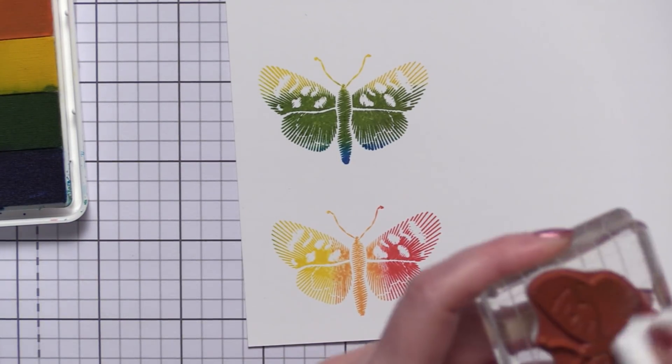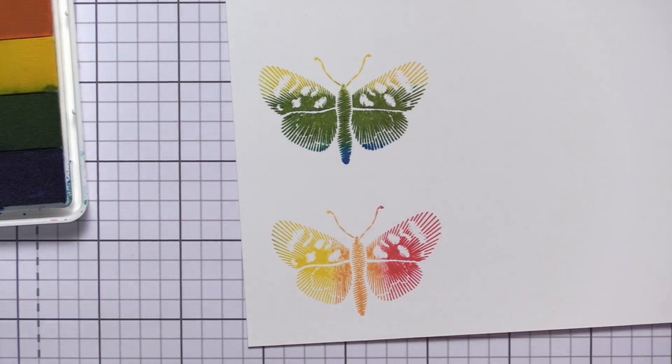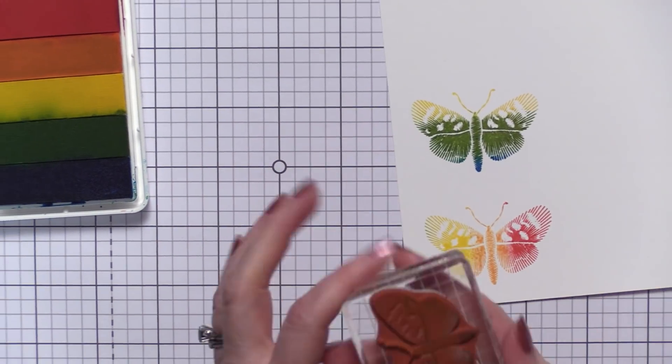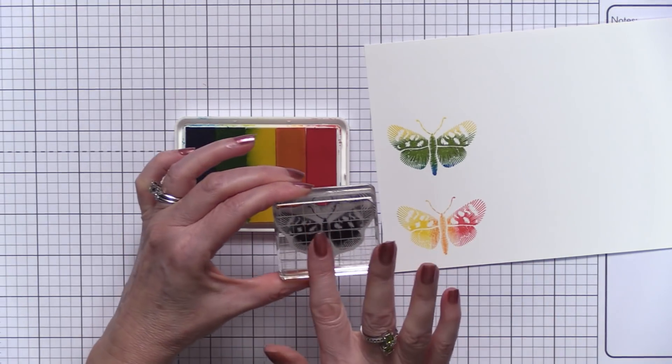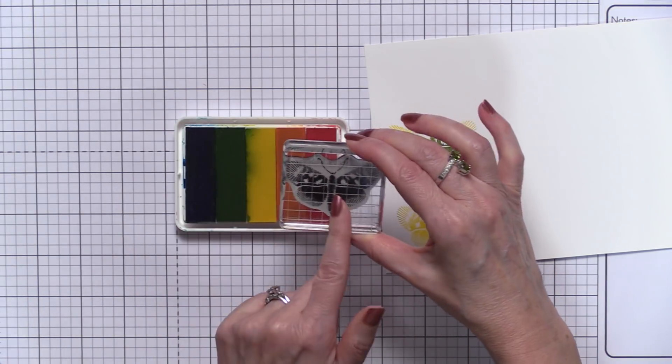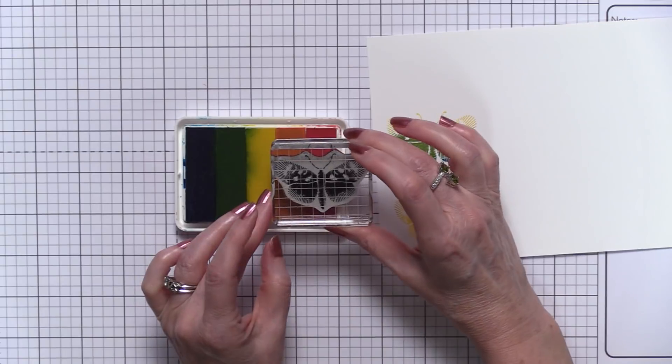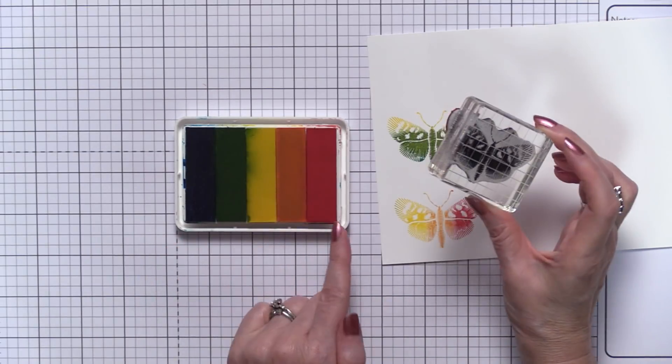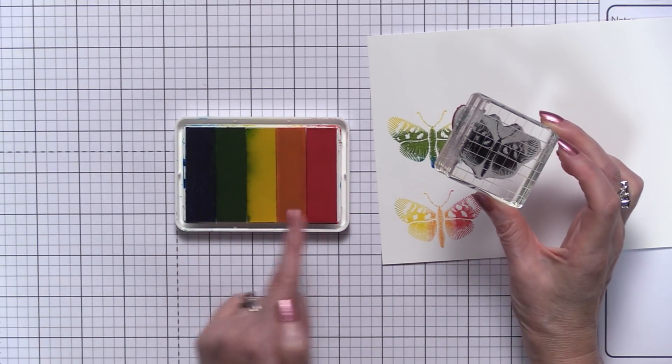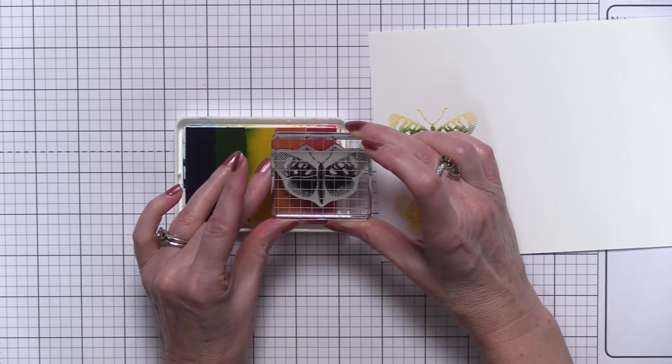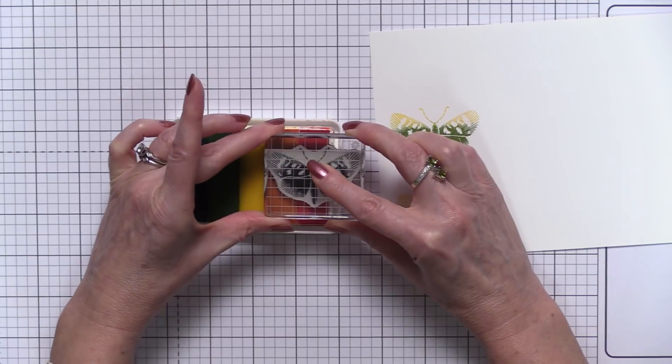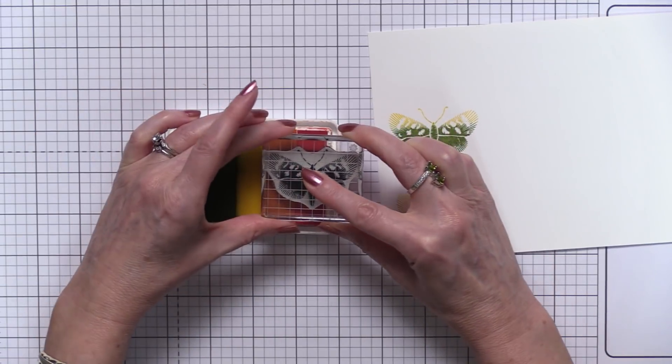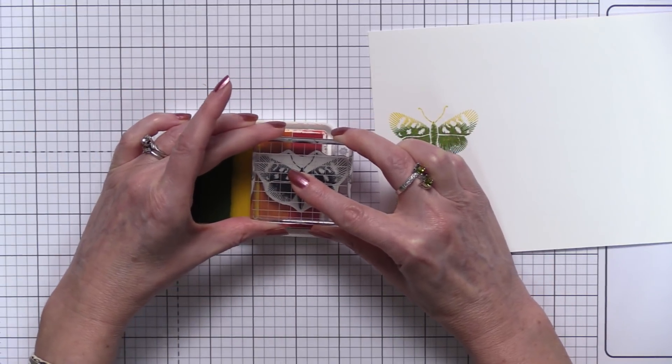So the best way to do that is we're going to find the center of your stamp. In this case it's the body of the butterfly. We're going to put the center of the stamp on the end strip, it could be either side. So in this case we're going to put the center of the body in the red ink. Again, we're moving back and forth ever so slightly, getting rid of that line.